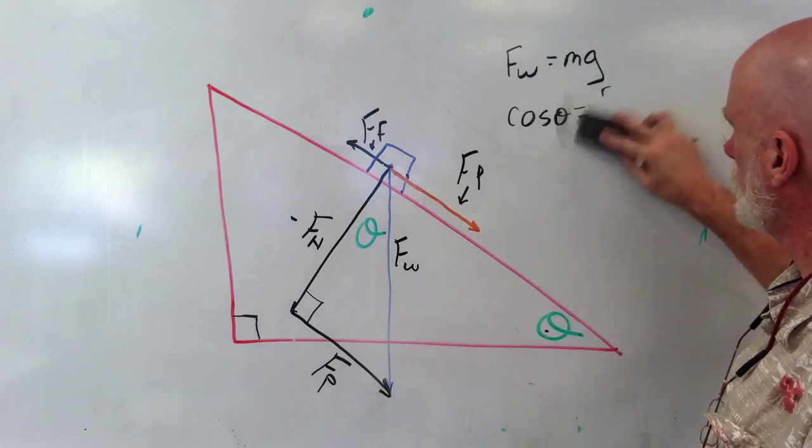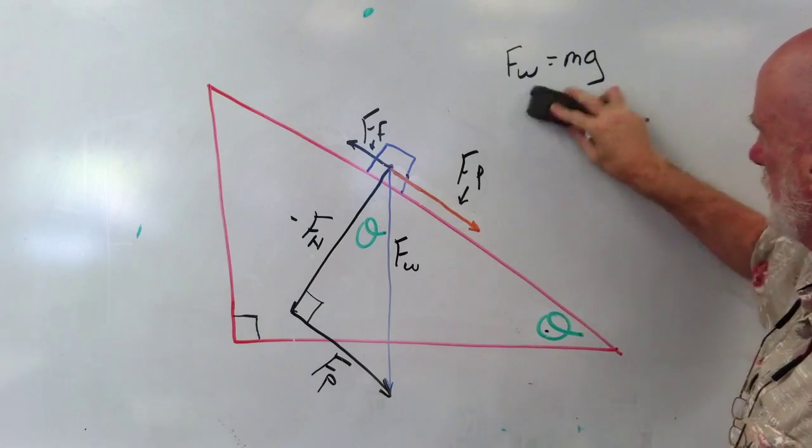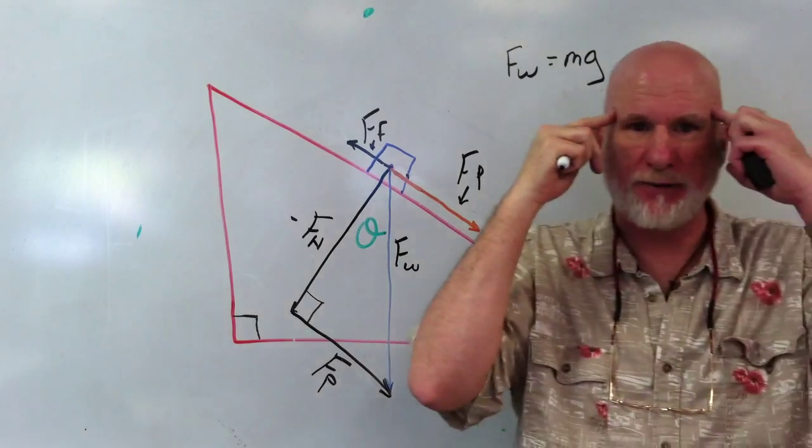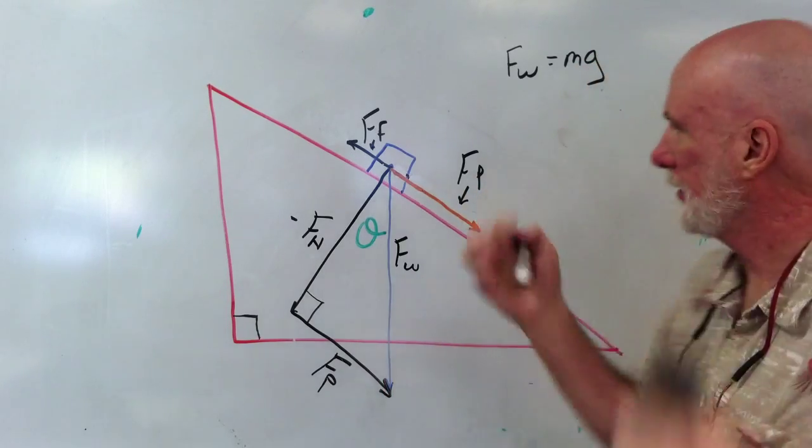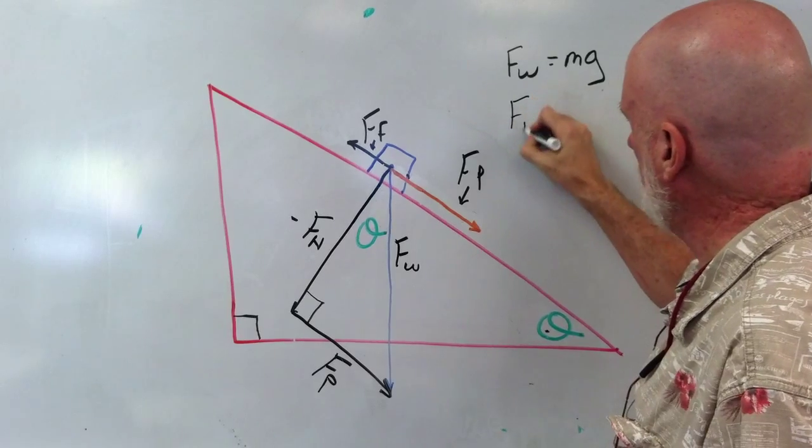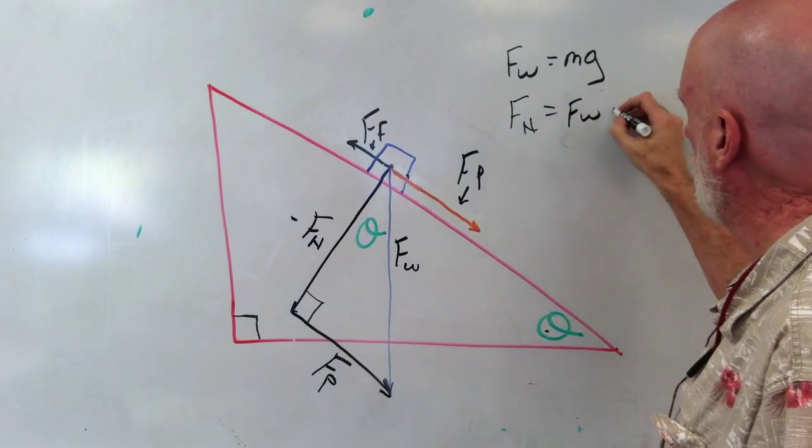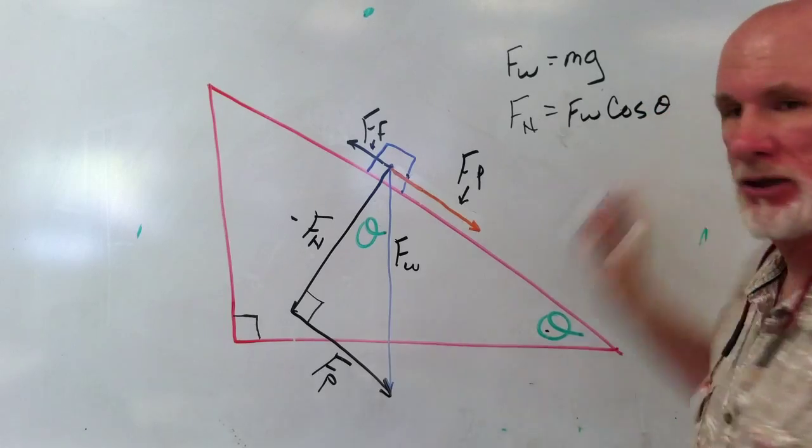So I'm going to erase this. Keep that in mind: Fw cosine theta, cross multiplying. So it would be Fn equals Fw cosine theta.